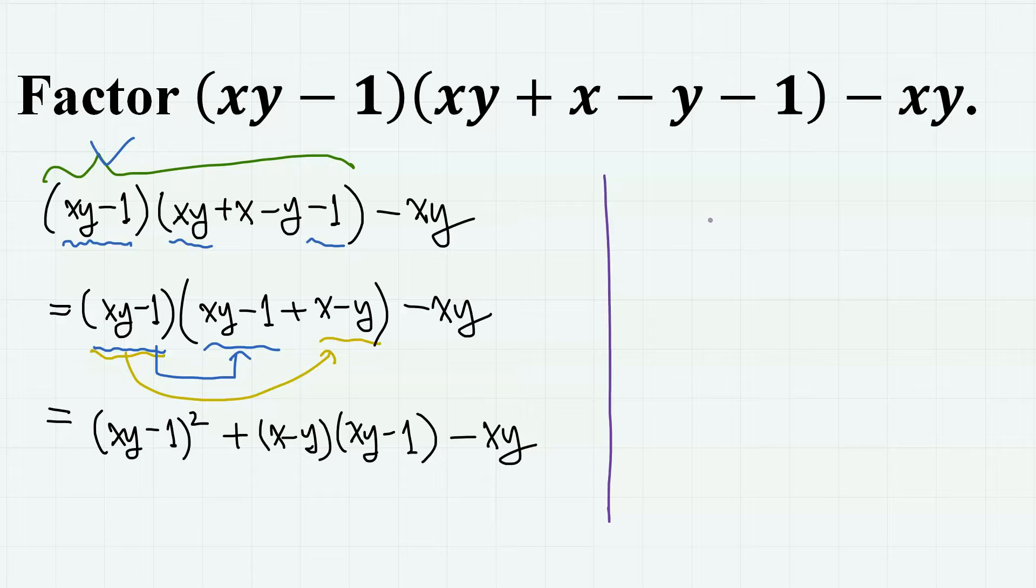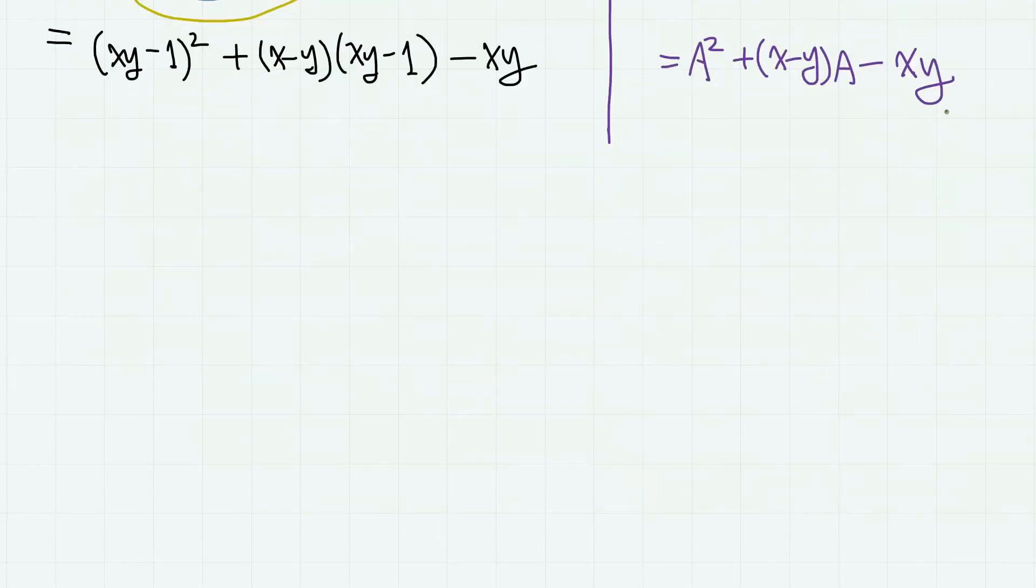If you think this is still too complicated, you can simply substitute that common part as a. Then we can write this as a times a plus x minus y minus xy. So we have a square plus x minus y times a minus xy. And this expression actually looks simpler, so let's actually use it and write on the left.